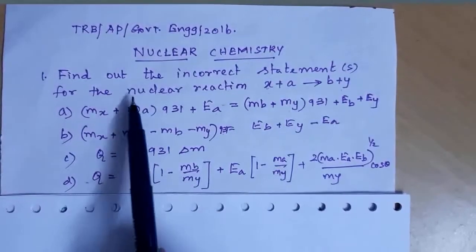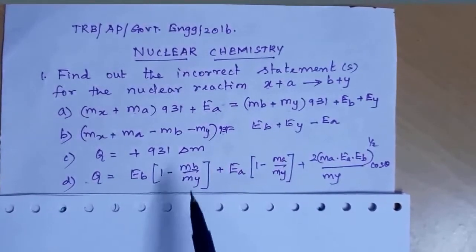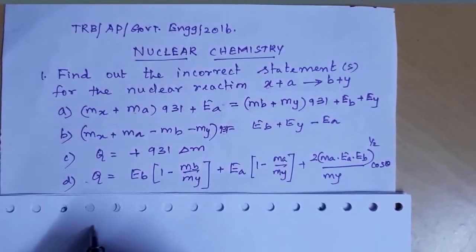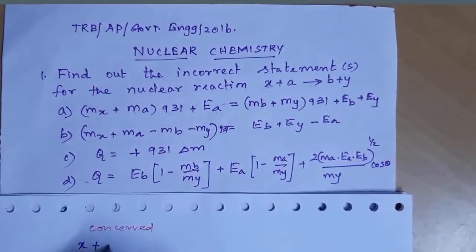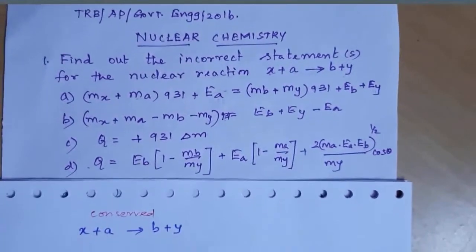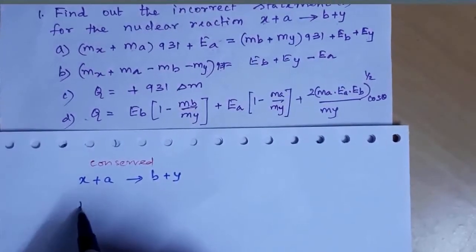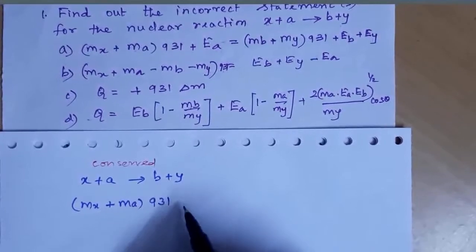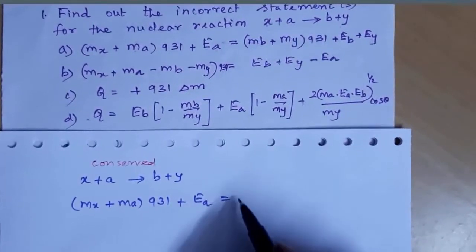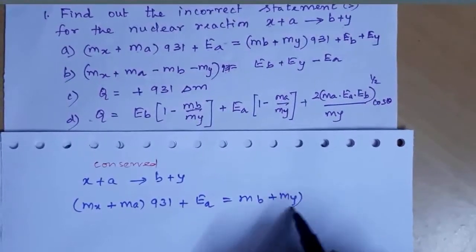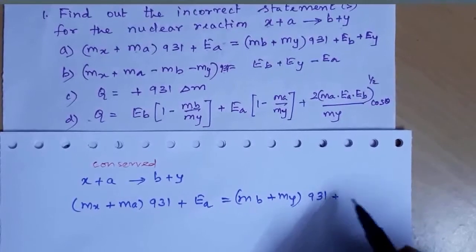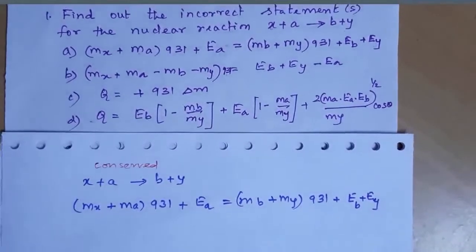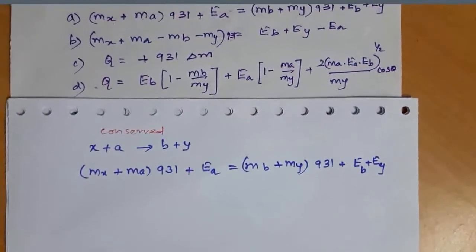Find out the incorrect statements for the nuclear reaction X plus A gives B plus Y. For this nuclear reaction, energy is conserved. We can write: mass of X plus mass of A, multiplied by 931 MeV, plus kinetic energy EA, is equal to mass of B plus mass of Y, multiplied by 931, plus energy of B plus energy of Y.